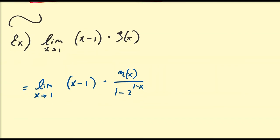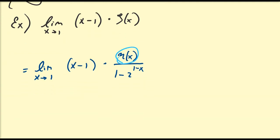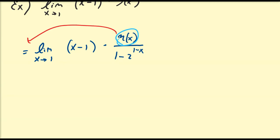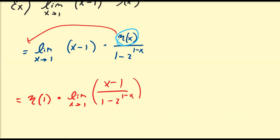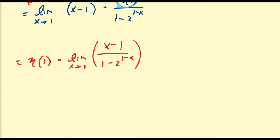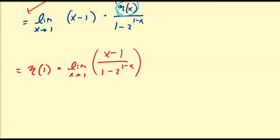Since eta of x has no issues as x goes to 1, we factor it out: this becomes eta of 1 times the limit as x approaches 1 of (x−1) divided by (1 minus 2^(1−x)). We already know eta of 1 equals the natural log of 2, so this is ln(2) times the limit as x approaches 1 of (x−1) divided by (1 minus 2^(1−x)).